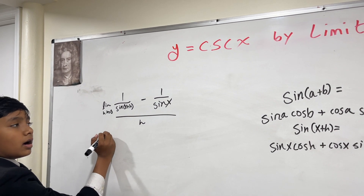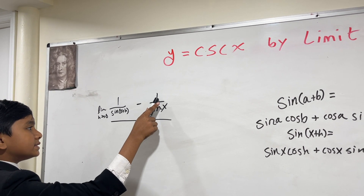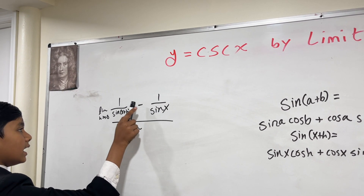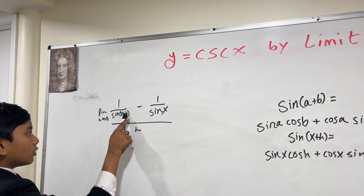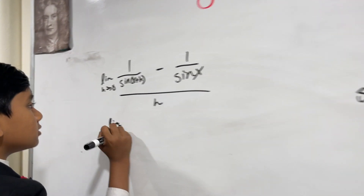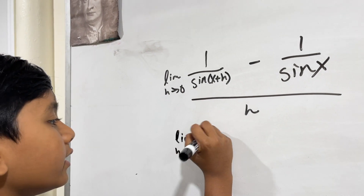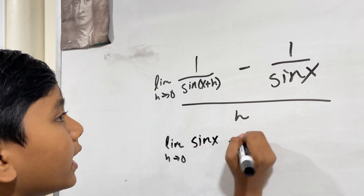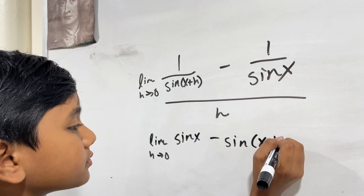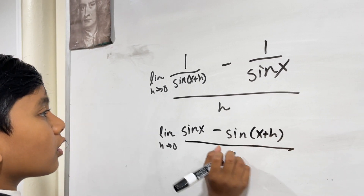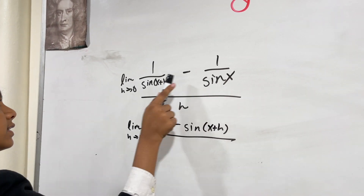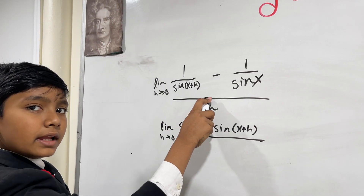Now I'm going to multiply the first term by sine(x) over sine(x) and the second by sine(x + h) over sine(x + h). That will give me sine(x) minus sine(x + h) over the common denominator sine(x) times sine(x + h).